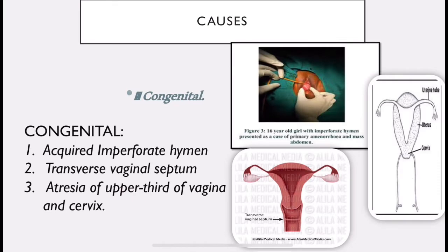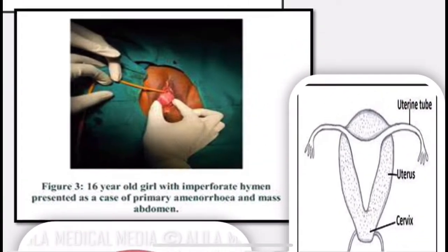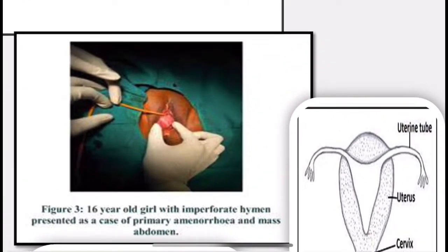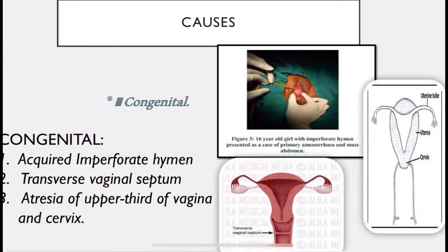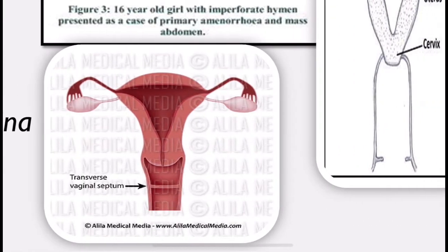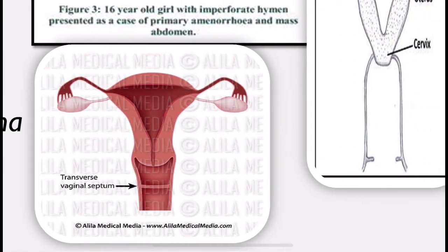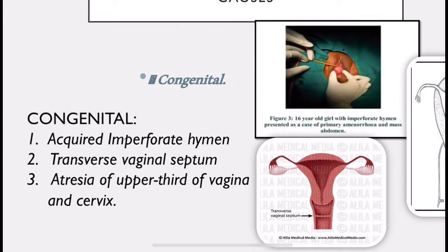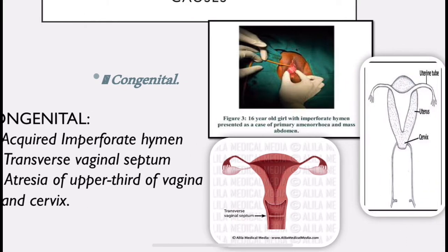The causes are congenital and acquired. The congenital causes of cryptomenorrhea are: imperforate hymen, where the hymen covers the whole opening of the vagina preventing blood from flowing out; transverse vaginal septum, which again blocks blood flow; and atresia, meaning absence or closure of the upper third of the vagina and cervix.